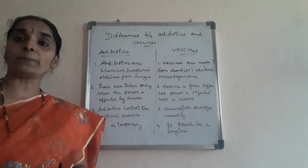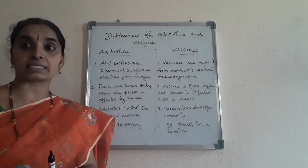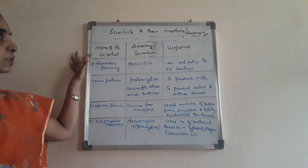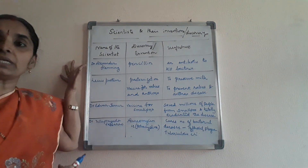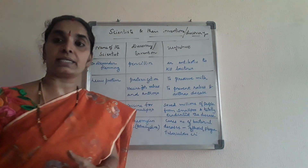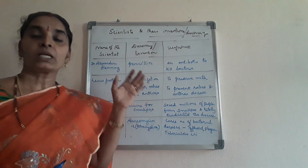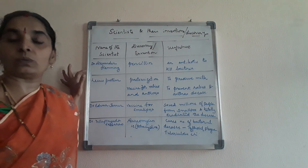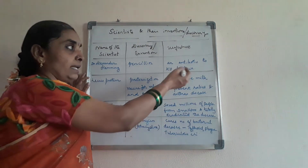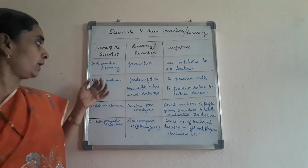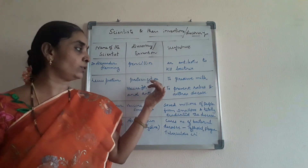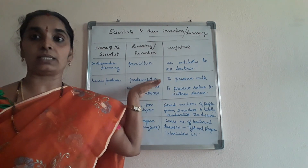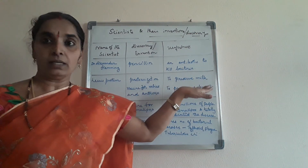Next we will look at different scientists who developed different vaccines. Several scientists invented antibiotics and discovered vaccines for various diseases. Alexander Fleming was the first to invent the antibiotic penicillin to kill bacterial diseases. Louis Pasteur — who you know from the pasteurization theory in the cell lesson — developed the pasteurization method to preserve milk for a longer period.